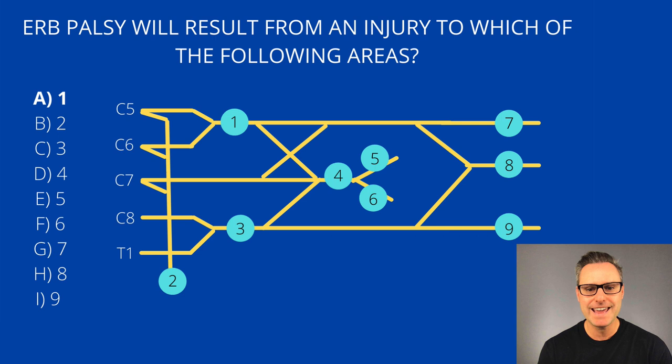The correct answer here is A, location number one. Now, Erb palsy is also known as waiter's tip, and this is characterized by a couple of things. First, a deltoid and supraspinatus injury causes an abduction defect that results in the arm hanging by the side. The second issue here is a functional defect in lateral rotation. This results in an arm that is medially rotated. Now, this is due to infraspinatus and supraspinatus muscle defects. And finally, a defect in flexion and supination results in an arm that is extended and pronated. This is due to a biceps brachii defect.